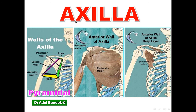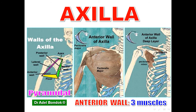Regarding the walls of the axilla — again, it is pyramidal with an apex, base, and four walls: anterior, posterior, medial, and lateral. The anterior wall is formed of three muscles: anteriorly the pectoralis major, and posteriorly the pectoralis minor and subclavius, with the clavipectoral fascia between them.